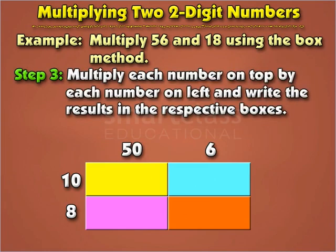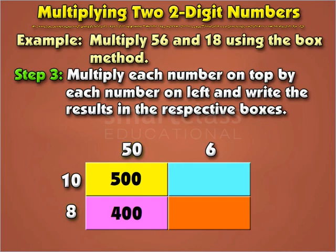Step 3: Multiply each number on the left with each number on top and write the results in the respective boxes. Fifty into ten is equal to five hundred — write the result in the yellow box. Fifty into eight is equal to four hundred — write the result in the pink box. Six into ten is equal to sixty — write the result in the orange box.